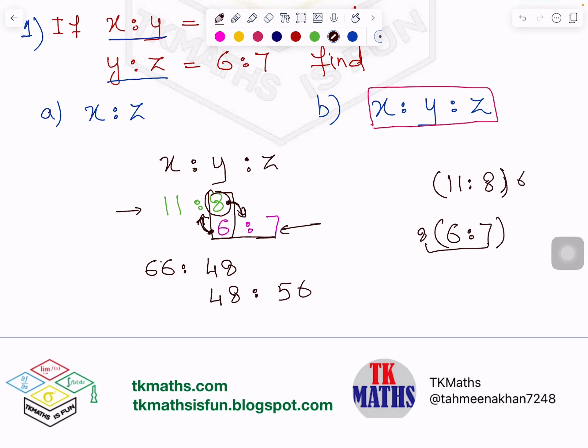Now do you notice that y is same, which is 48? So I have gotten here y same and this was the target for this question. The common number, I mean the common letter should have the same number. So I got it. So I can write here, if I see, answer of part 1, which is x is to z, because this is same, so I can say it is 66 is to 56.